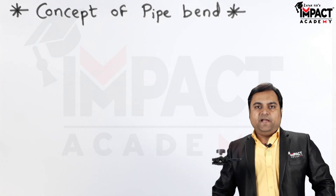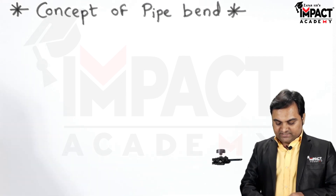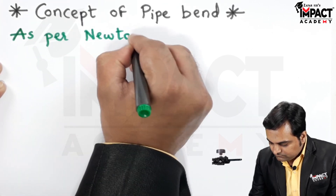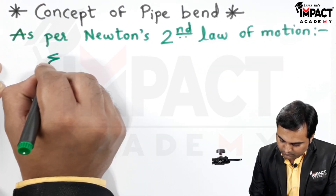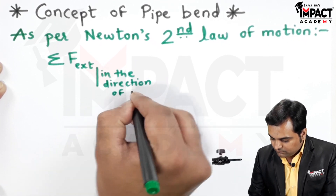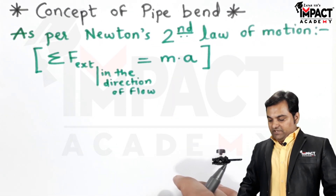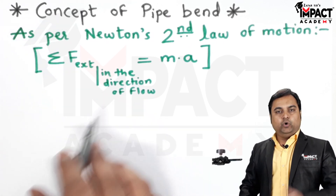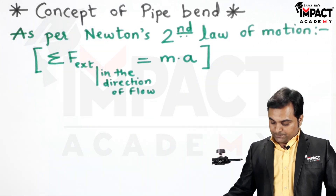In order to explain the concept of pipe bend, first I will start with Newton's second law of motion. Newton's second law of motion says that the summation of all external forces in the direction of flow is equal to mass into acceleration, and that gives us the force.